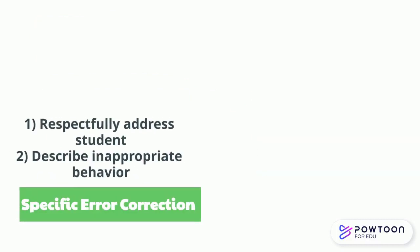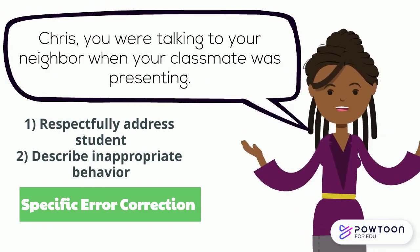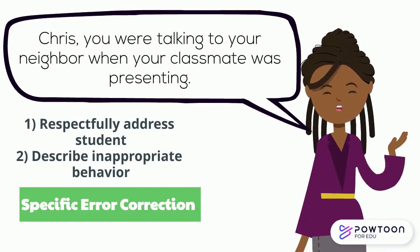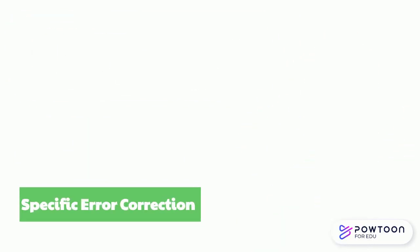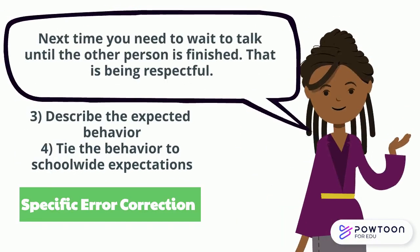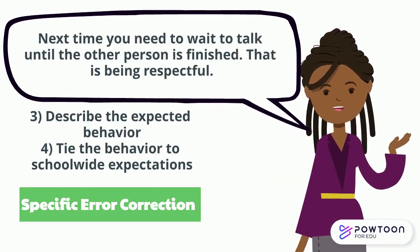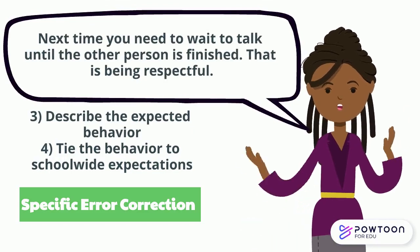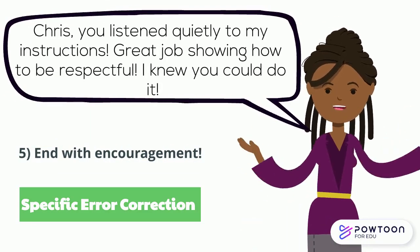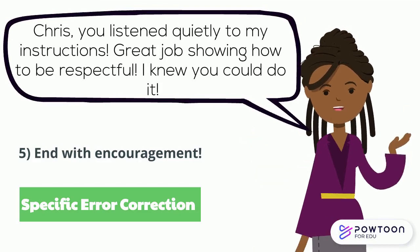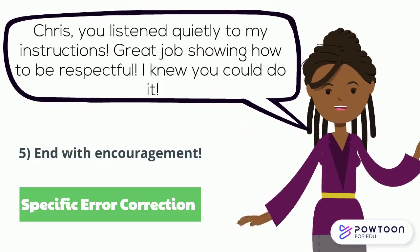In specific error correction, you are respectfully addressing the student and describing their inappropriate behavior. You will then describe the expected behavior and tie the behavior to school-wide expectations. You will end with encouragement and specific praise as soon as the student carries out what you need them to do.